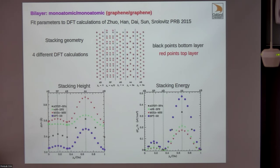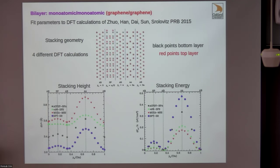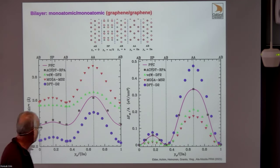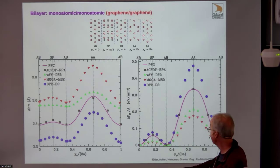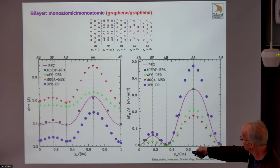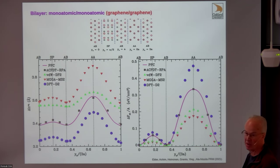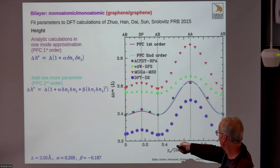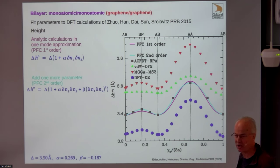One slightly disturbing feature is that the four DFT calculations vary quite a bit from each other. The paper argued that one particular DFT calculation gave mechanical properties closest to experiment, so that was taken as the reference. We fit our curves to that calculation and do pretty well—the stacking energy and stacking heights are reproduced. If you want to do better, you add more parameters; adding another term in the height difference between the two sheets lets you fit essentially exactly. Given the large deviations between DFT methods, it's not clear that extra precision is necessary.